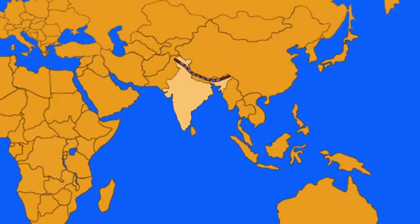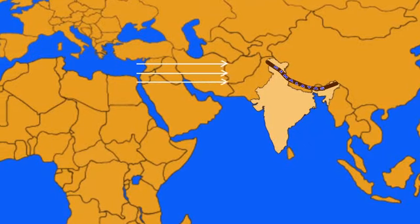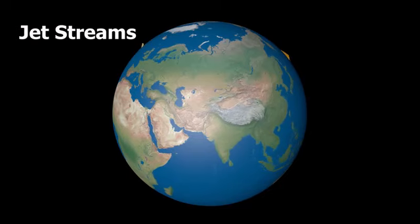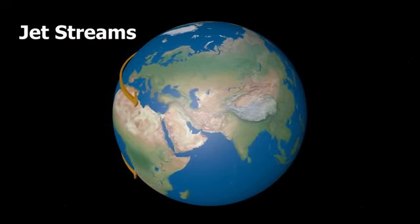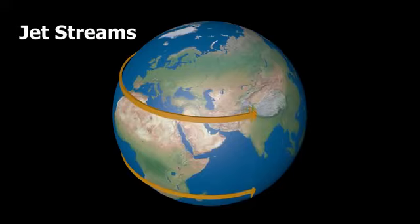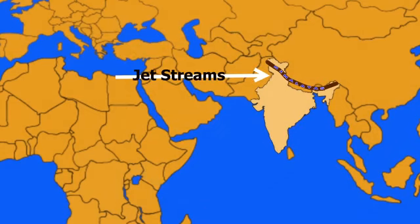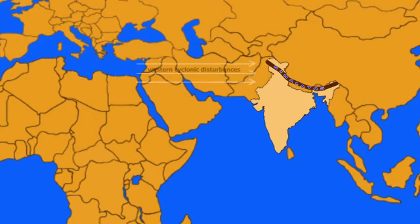The upper air circulation in this region is dominated by the westerly flow. An important component of this flow is the jet streams — winds that blow at great speed. These jet streams are located approximately over 27 to 30 degrees north latitude and are known as subtropical westerly jet streams. Over India, these jet streams blow south of the Himalayas all through the year except summer. Western cyclonic disturbances are experienced in the north and northwestern part of the country and are brought in by the westerly flow.